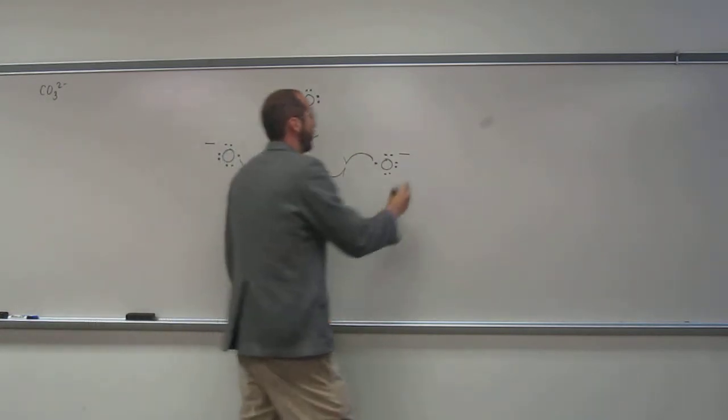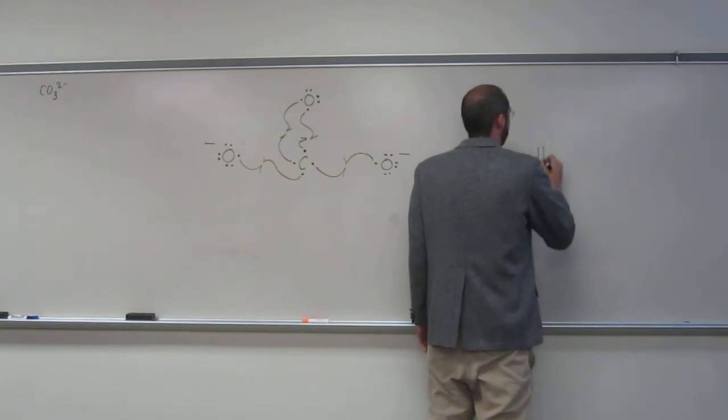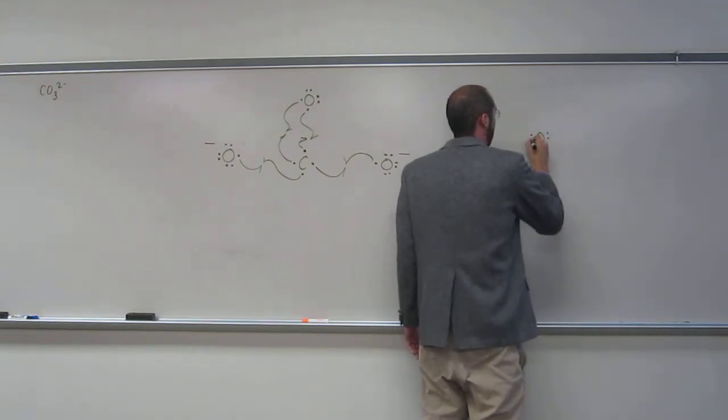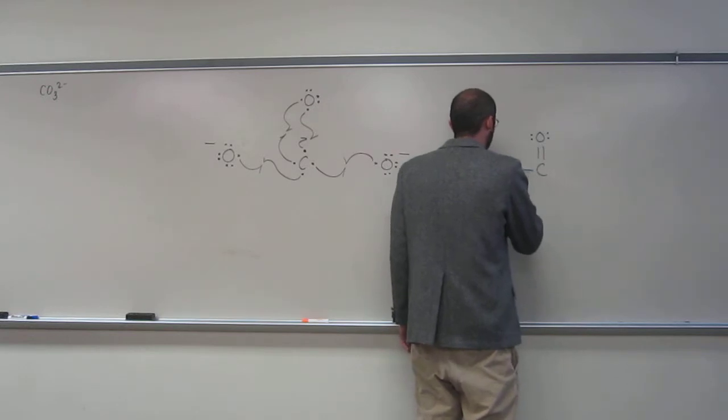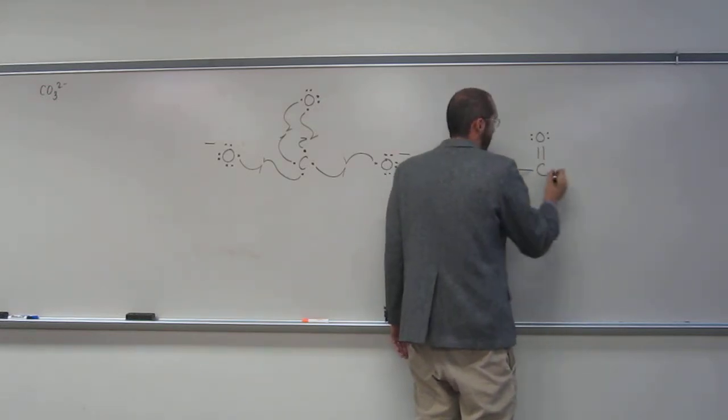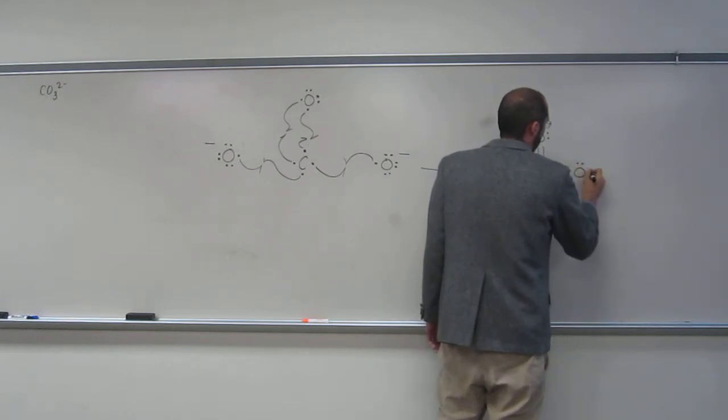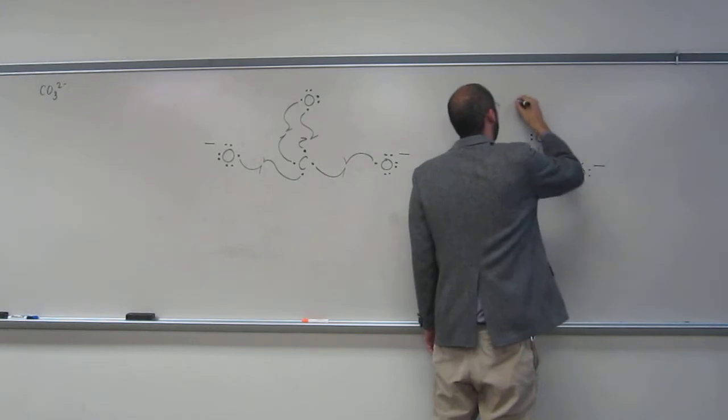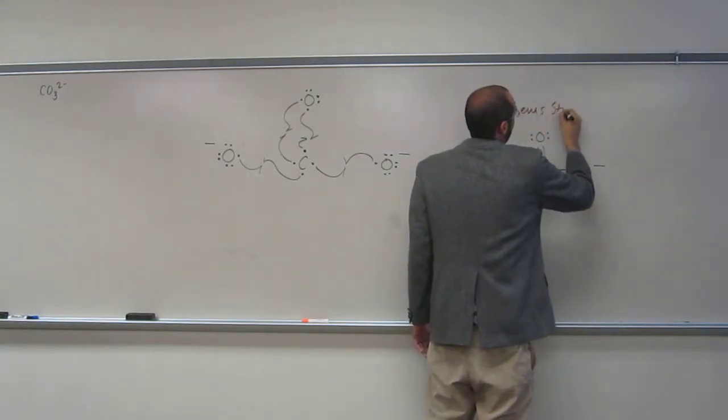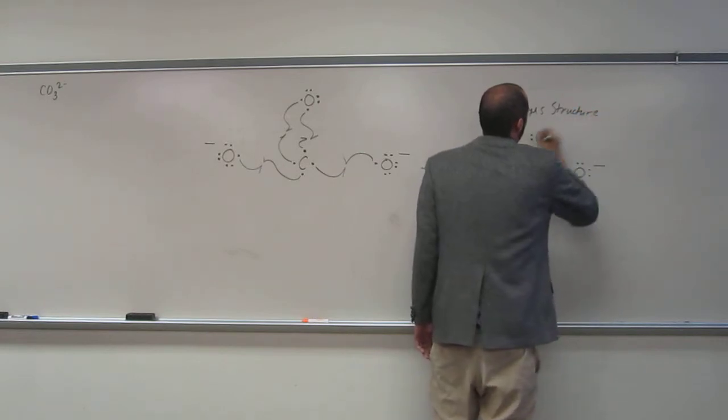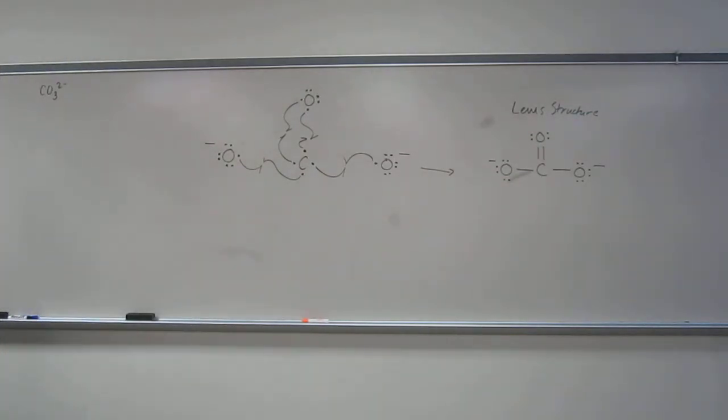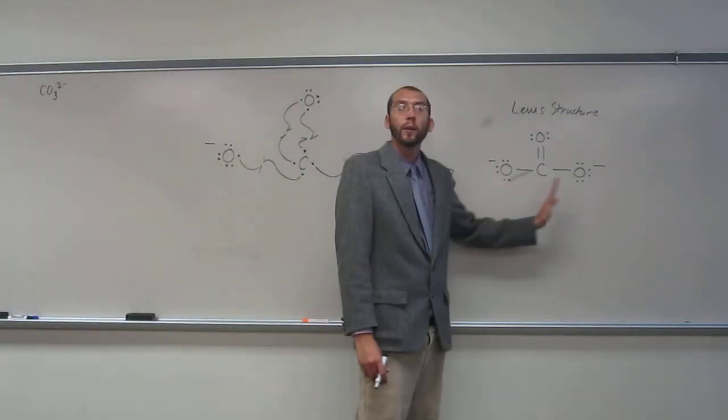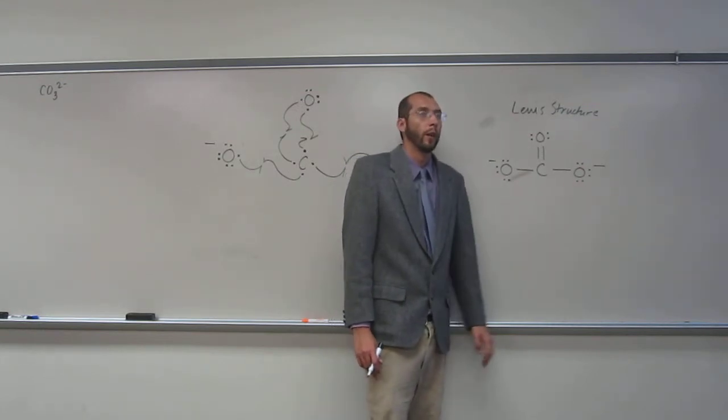Okay. Two. So, there's the Lewis structure of the carbonate anion. So, hopefully, you got something that looked like that. So, again, formally, you can see where those two negative charges are. We call them formal charges.